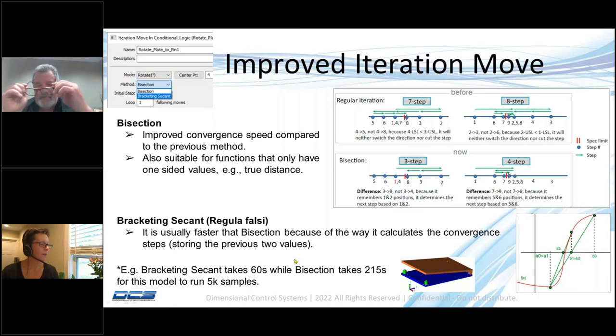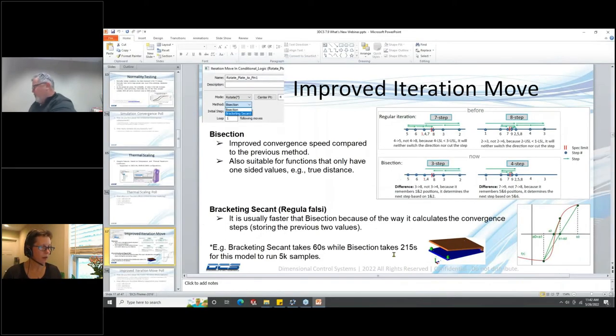To resume, you can use bisection or bracketing secant. They will both converge and give you results for your iteration move. You could run a small number of samples, 50 or 100, and see if the bracketing secant is faster, then use it. That's the whole idea. I'm going to show you how this is set up and why I got such a difference in the time needed to run 5000 samples.